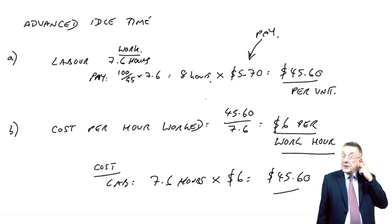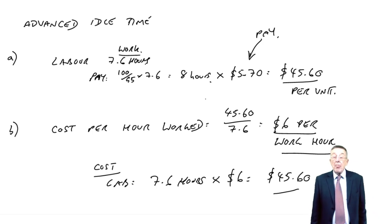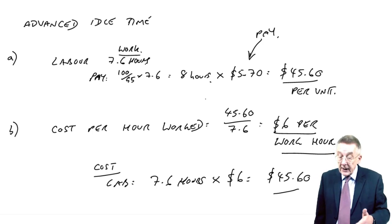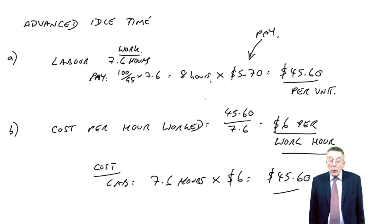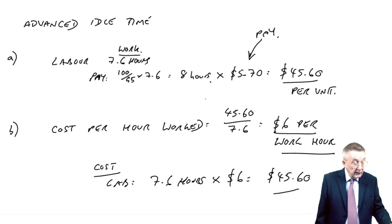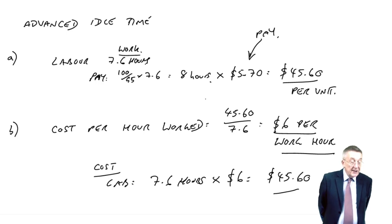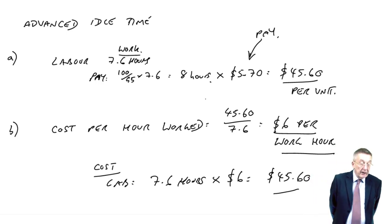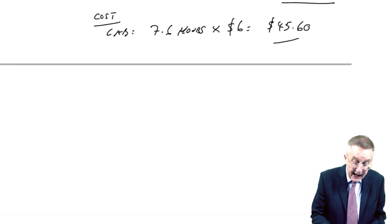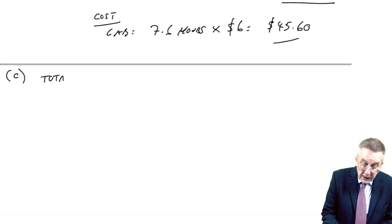And so, on the cost card, it wouldn't really matter. The total is $45.60. But normally you'd say, labour, 7.6 hours per unit. How much is each hour costing? Well, the working hours are costing $6.00. Again, $45.60. Now, I don't know if that's making sense, because as I say, even if you were never asked variances on this, on advanced idle time, certainly what's there could be asked. There's bits of costing. But let's carry on.